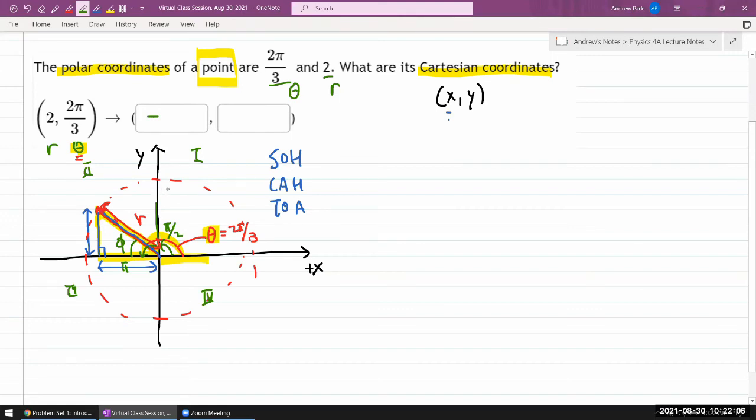Let me go through here. So let me start out with my x coordinate. So I see that in reference to this angle φ, this side is an adjacent side, so I need to use CAH.